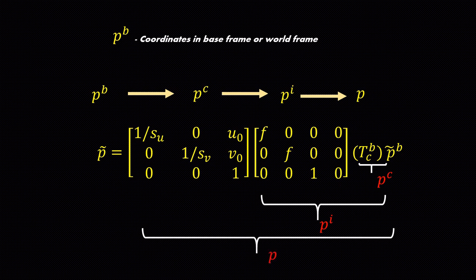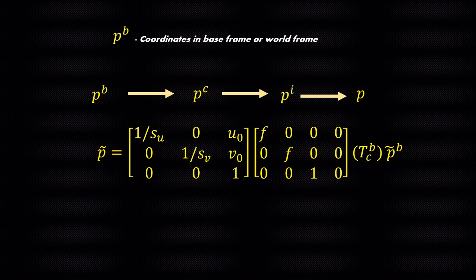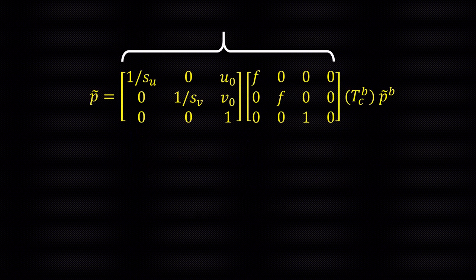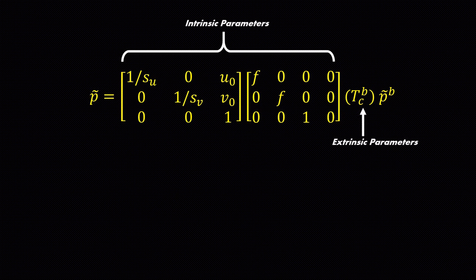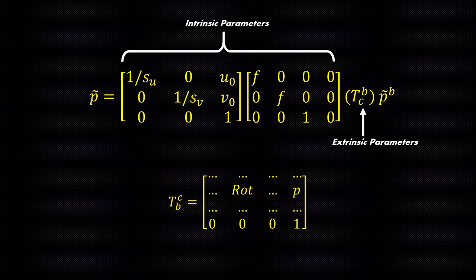Combined transformation matrix which transform the world coordinates to the pixel coordinates is called the camera calibration matrix. The first two matrices and its elements which are internal to the camera are called intrinsic parameters. Third matrix which is a transformation matrix which transform world coordinates to pixel coordinates consist of a rotational matrix and translation is external to the camera so it is called extrinsic parameters.